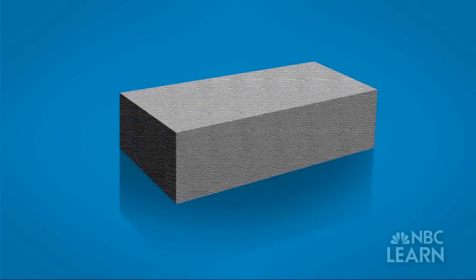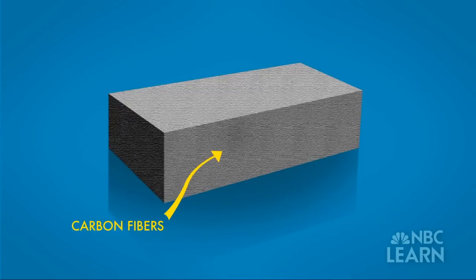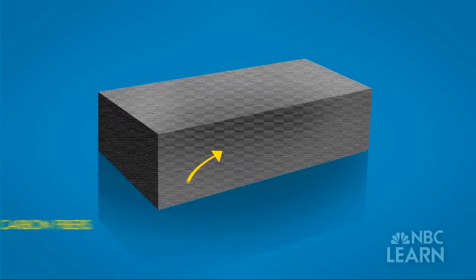In early tests, Chung discovered that if she added carbon fibers to concrete, the electrical properties of the structure would change. The fibers don't need to touch. Instead, their contact with the hardened cement allows the entire structure to conduct electricity.